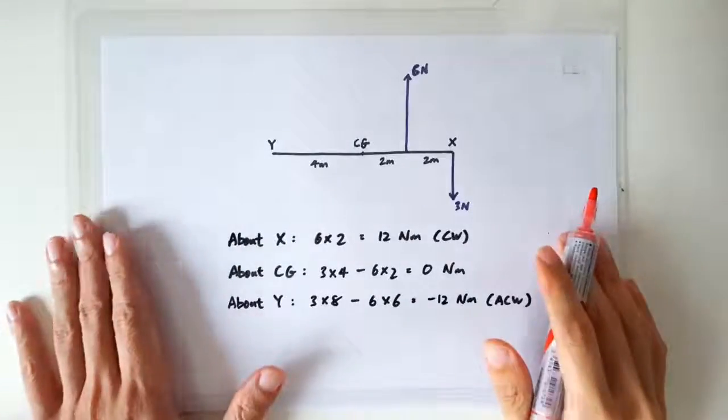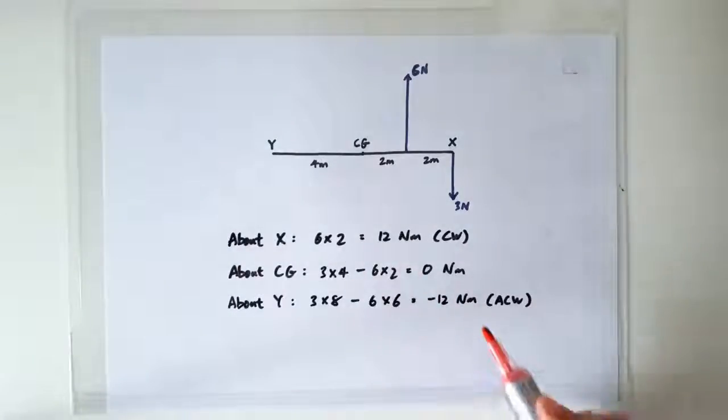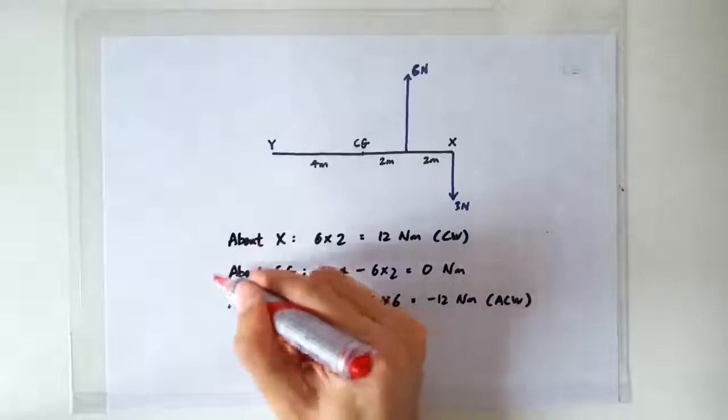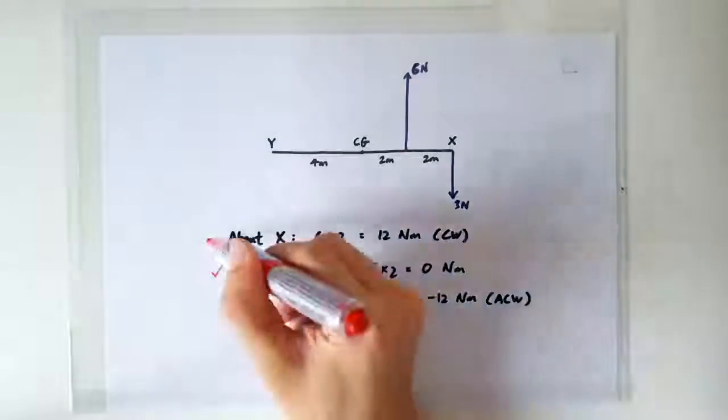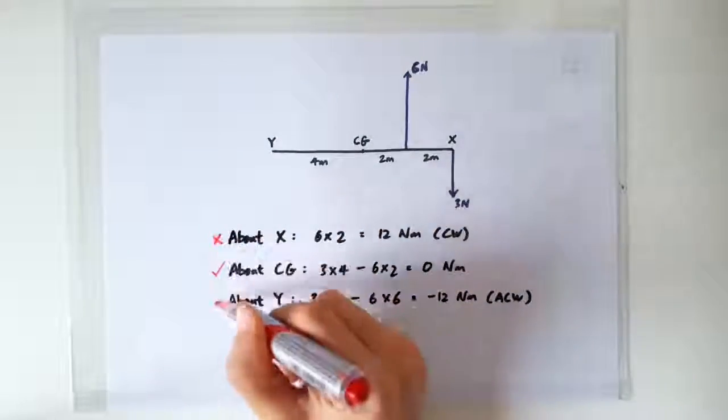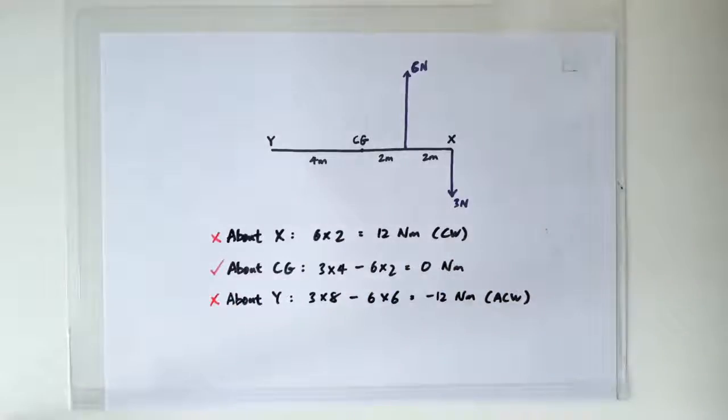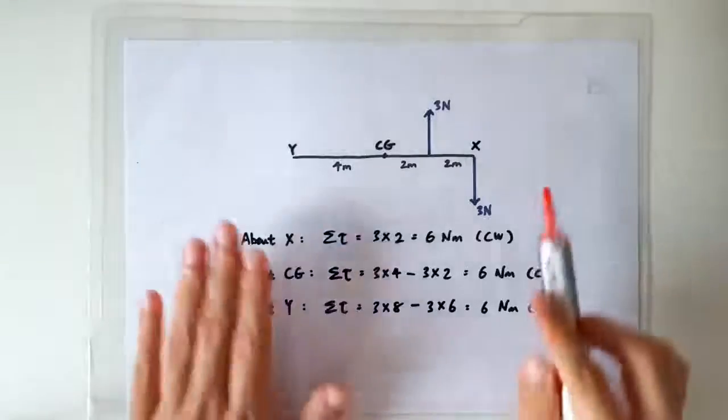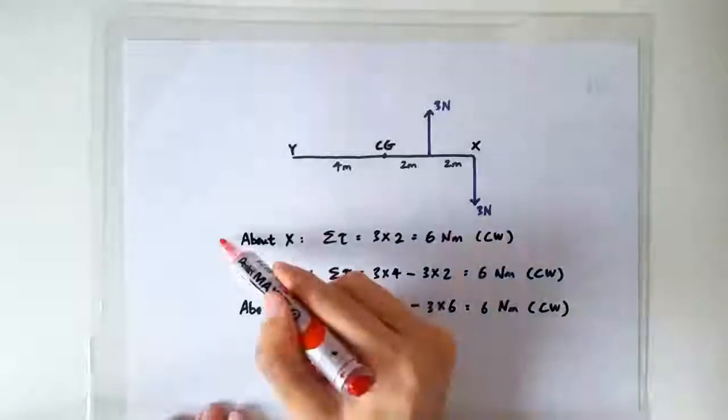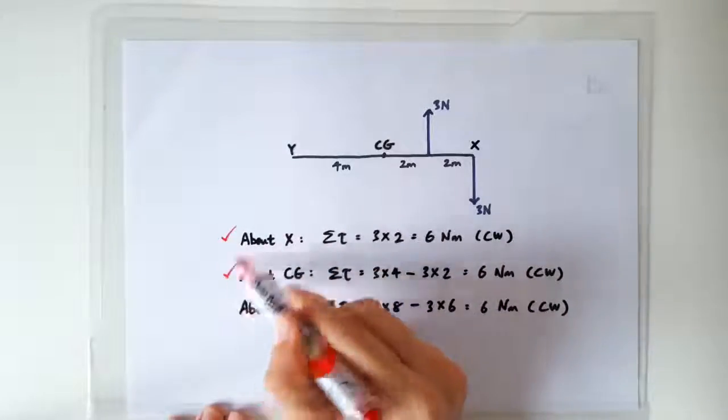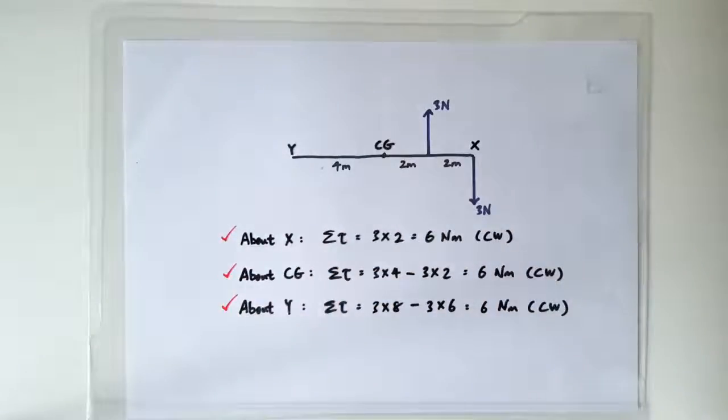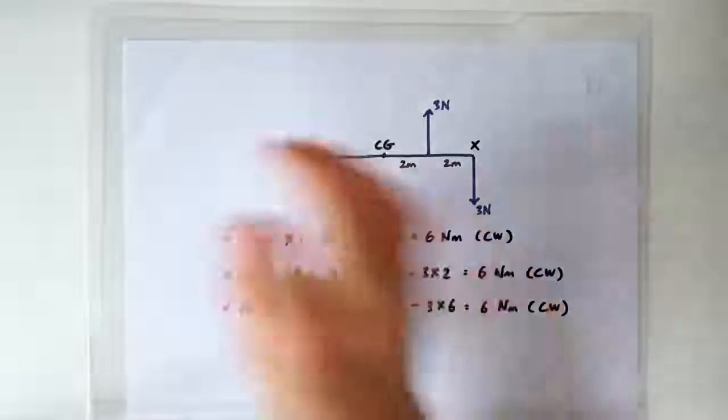When net force is not 0, you must evaluate the moment about the CG. Evaluating the moment about any other point will give you the wrong outcome. It's only when net force is 0 that you have the luxury and the freedom to choose to evaluate your net moment about any point.